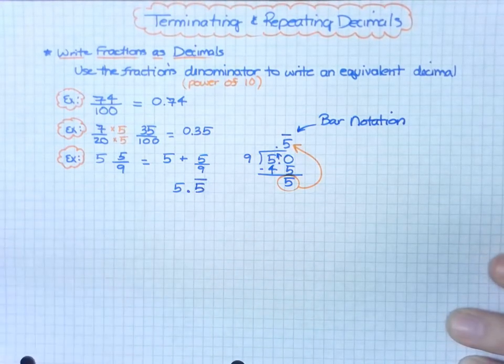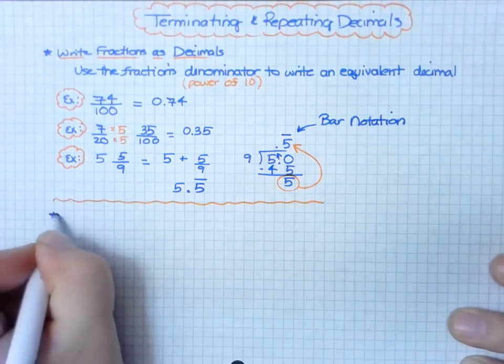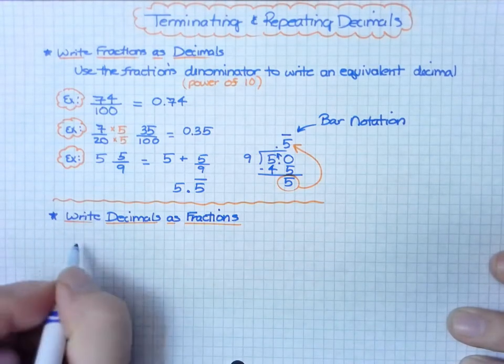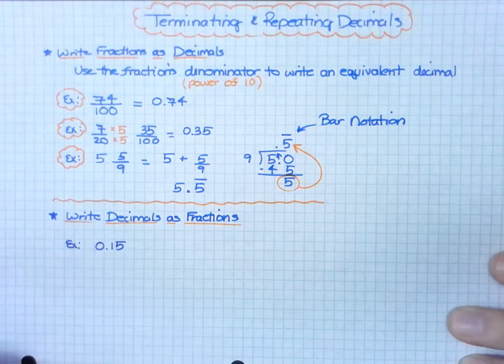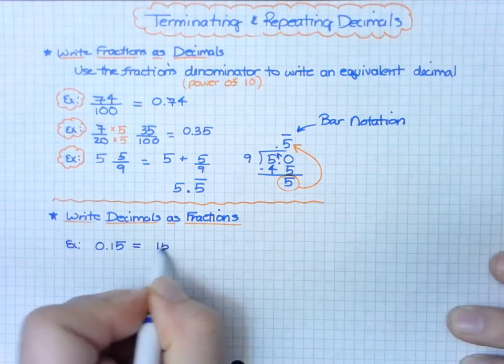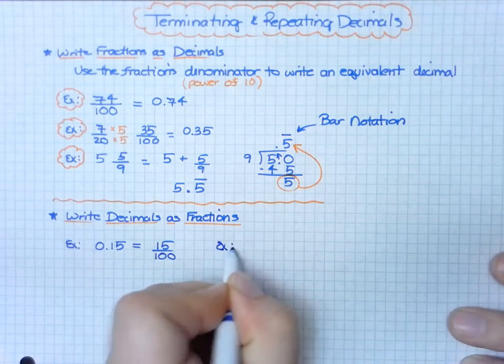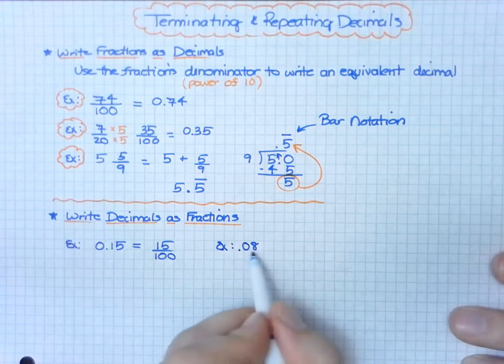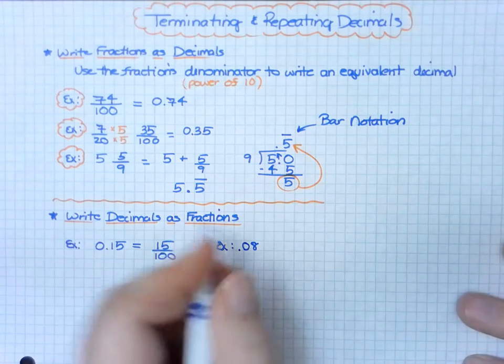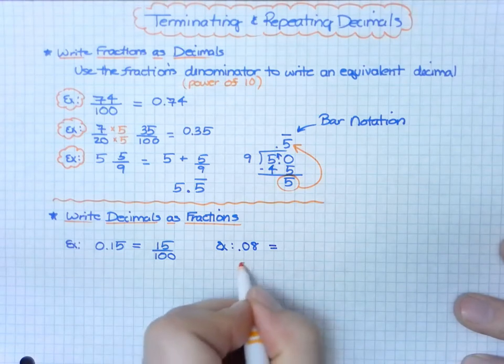Finally, we're going to write decimals as fractions. An example would be 0.15, showing me 15 out of the hundredths place, so I put it over 100: 15/100. Another example is 0.08.